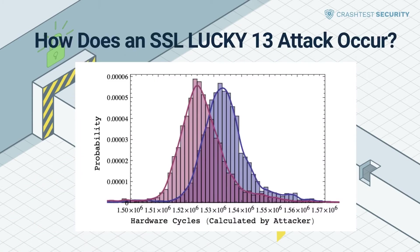In a nutshell, this attack relies on a difference in processing times between TLS messages with at least two bytes of correct padding and TLS messages with one byte of correct padding or incorrectly formatted padding. Transport Layer Security messages with two bytes of padding are processed somewhat faster, and this difference can be detected when the arrival of TLS error messages is timed.